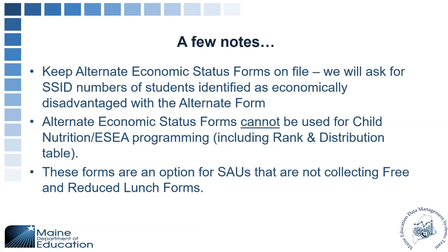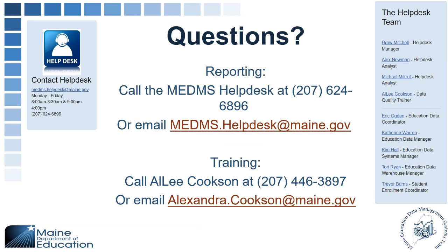For any further questions, contact information is available. For questions about how to enter data, please contact me — I'm Alexander Cooks, the data quality trainer. For reporting questions, please reach out to the Help Desk. Paula from the finance team has also been fielding many questions about the alternate economic status form. Paula's phone number is 624-6792.